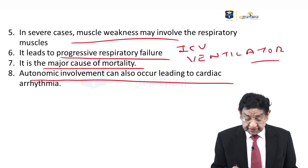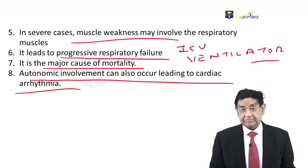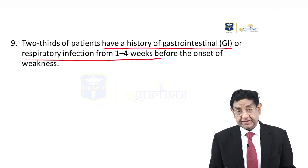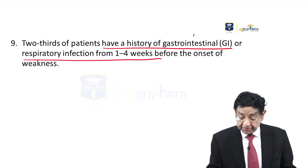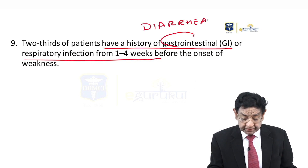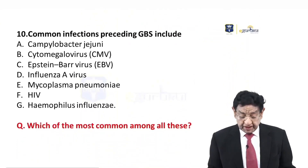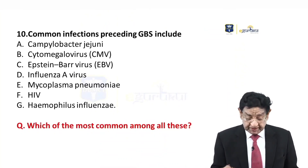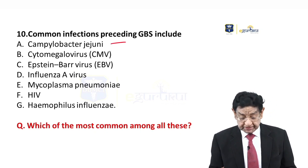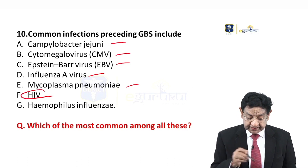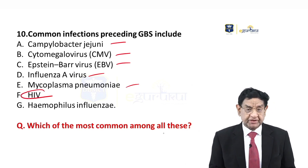Does the patient have a history of GI or respiratory tract infection one to four weeks before the onset of weakness? It could be GI where the patient may have had diarrhea, or there may be an upper respiratory tract infection such as a sore throat. Common organisms include Campylobacter jejuni, CMV, Epstein-Barr virus, influenza A, Mycoplasma pneumoniae, HIV as in our case, or Haemophilus influenzae.